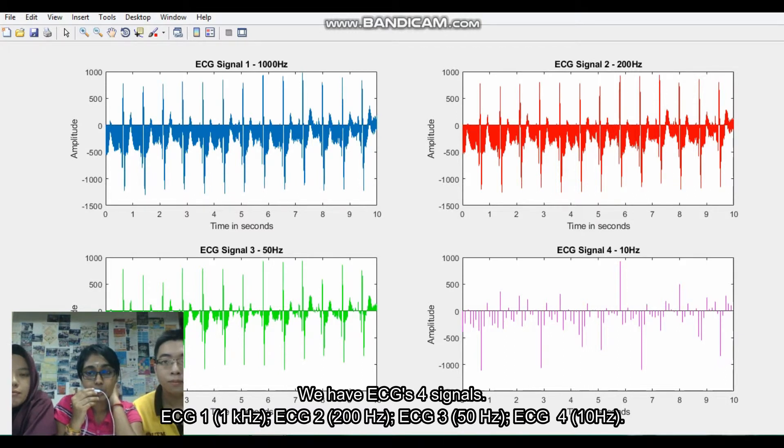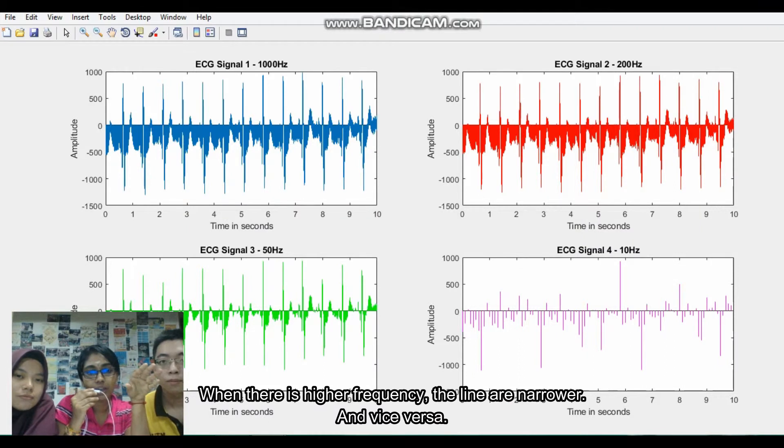ECG signal 2, 200 Hz. ECG signal 3, 50 Hz. ECG signal 4, 10 Hz. We can see that when there is higher frequency for the ECG signal, the lines are narrower, more closer. For lower frequency, the lines are far apart.